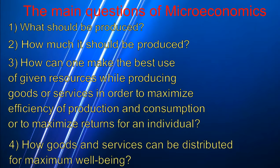The main questions of microeconomics are: What should be produced? How much should be produced? How can one make the best use of given resources while producing goods or services in order to maximize efficiency of production and consumption, or to maximize returns for the individual? How can goods and services be distributed for maximum well-being?